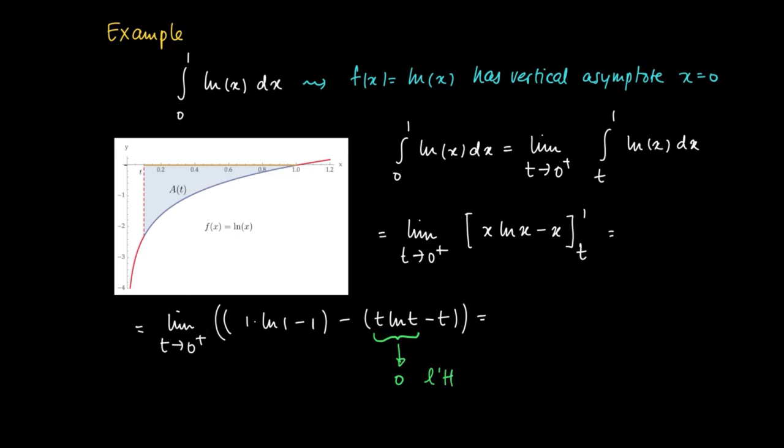And minus t also goes to 0 for t to 0 plus. So where we end up with is minus 1. So the improper integral from 0 to 1 of ln x dx is convergent.